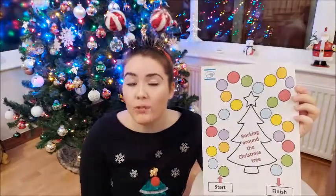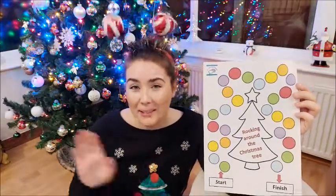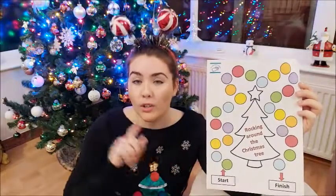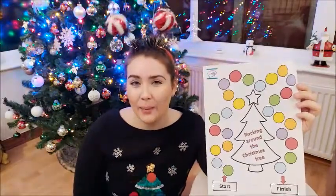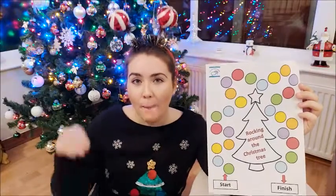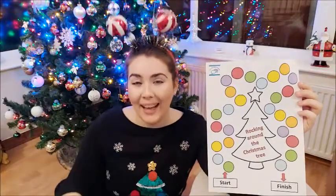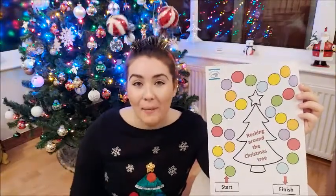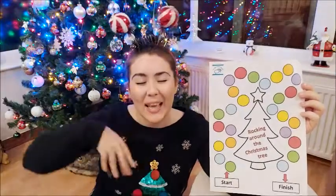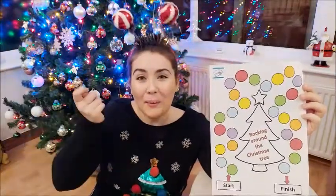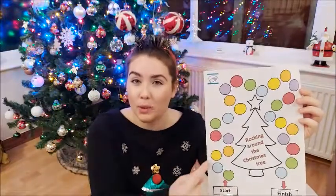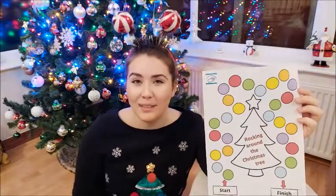And if you haven't got a dice at home, that's fine too. You can just write the numbers one to six on pieces of paper, cut them out so they're all separate, pop them in a bag or a bowl, and then when it's your turn, shut your eyes, dip your hand in, pick one out — and that's the number of times you can move around your board and do your practising.